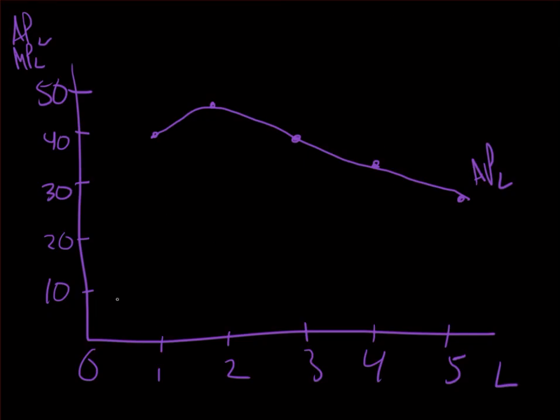So in between 0 and 1 I have 40. And I have in between 1 and 2, I'll have 50. And then I have over here I have 30, 20, and 10. This is my marginal productivity of labor.